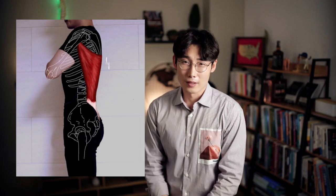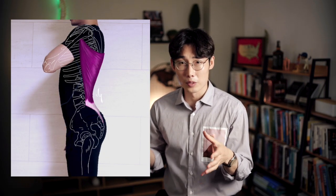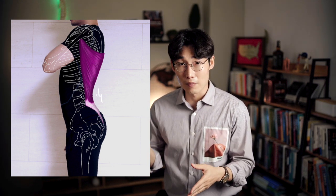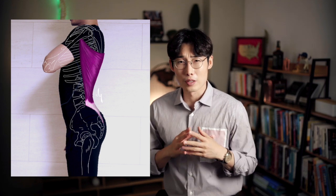Fourth, can the short latissimus dorsi muscle pull the pelvis bone forward or backward, and will the lumbar lordotic curve increase or decrease? The latissimus dorsi muscle is attached behind the pelvis and lower back. The short latissimus dorsi muscle can pull the pelvis posterior and upward, causing your pelvis to tilt forward and the lordosis of your lumbar to increase. If this has occurred, you should find it difficult to move your pelvis backward, and your lumbar spine will have limitation of movement when you flex forward.